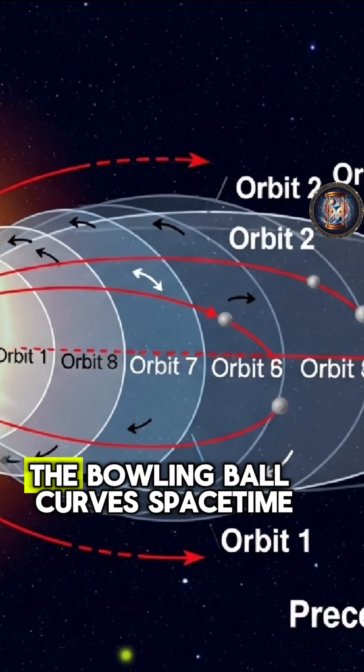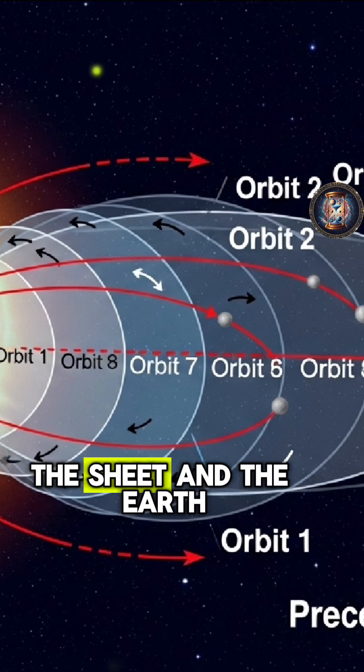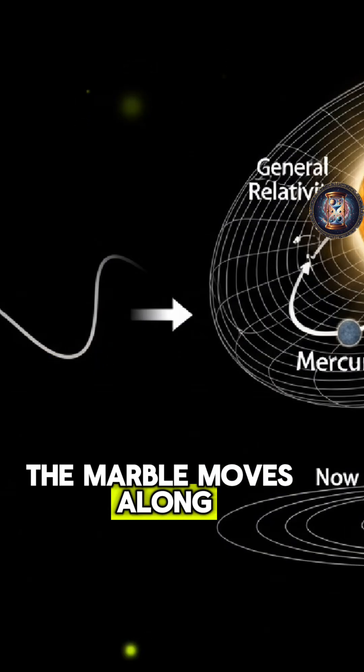Similarly, the sun curves spacetime, the sheet, and the earth moves along this curve.